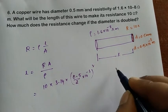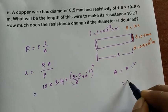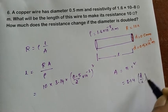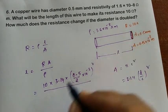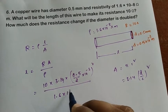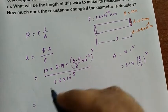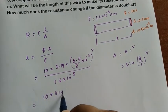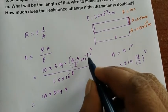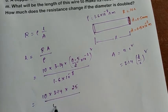So area = π × (d/2)² = 3.14 × (0.5/2 × 10⁻³)² divided by resistivity 1.6 × 10⁻⁸. The 2² gives 4 in the denominator. Rewriting: 10 × 3.14 × 25 divided by 4 × 1.6, with cancellations applied.